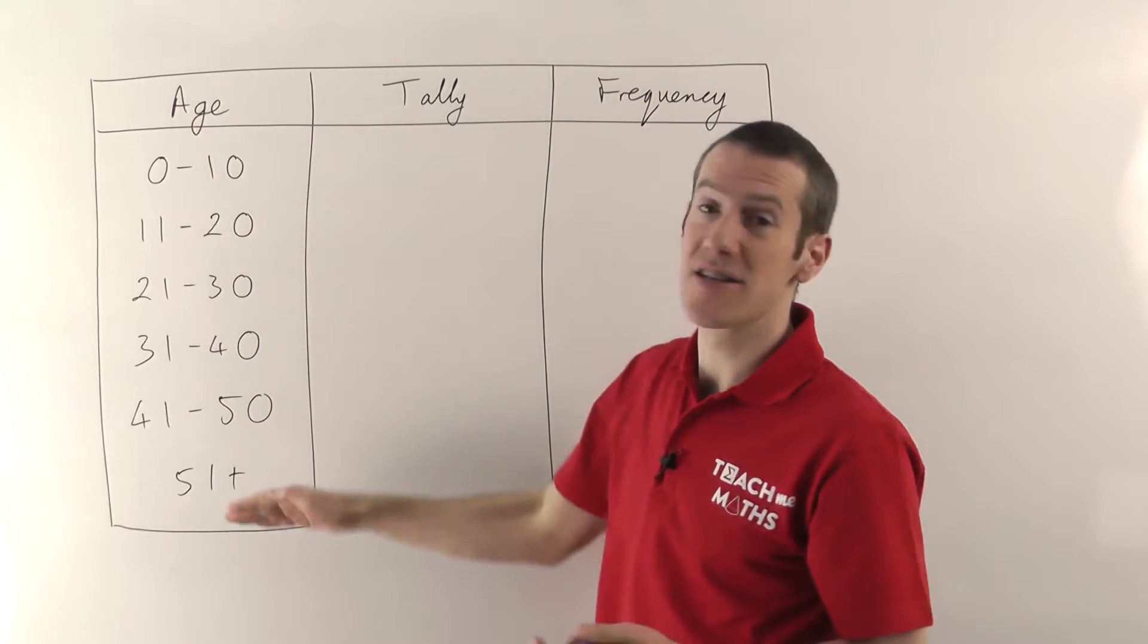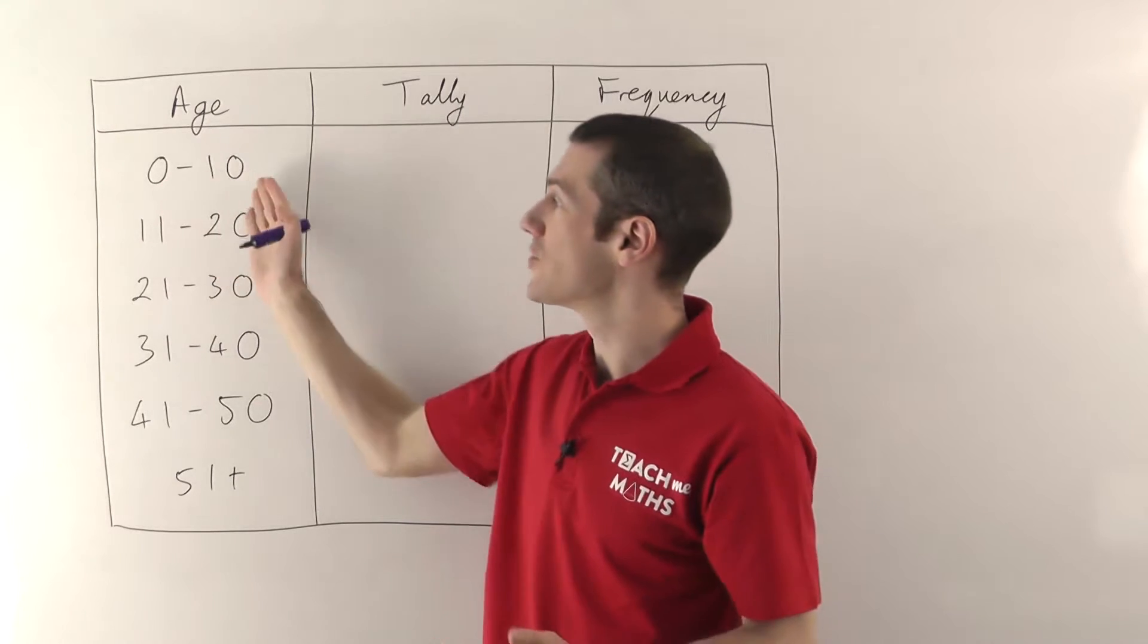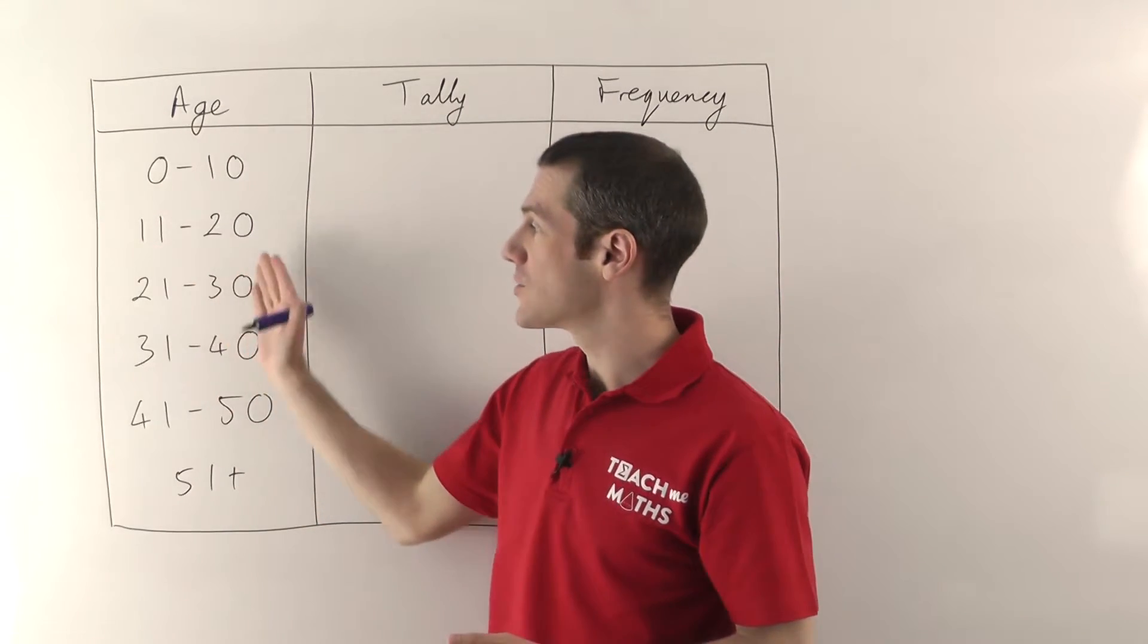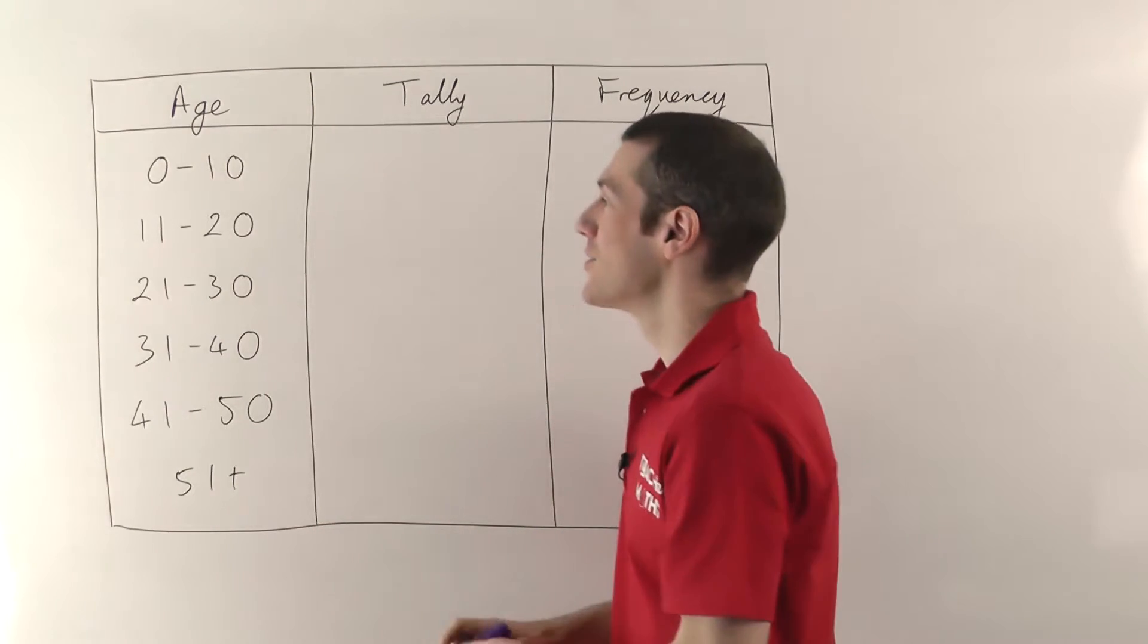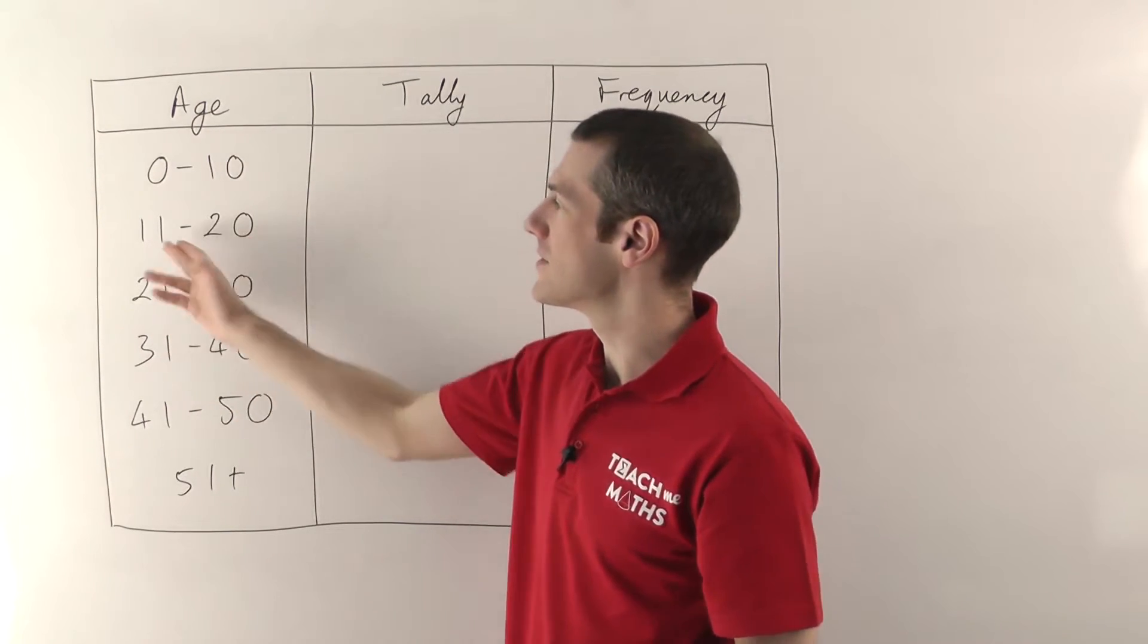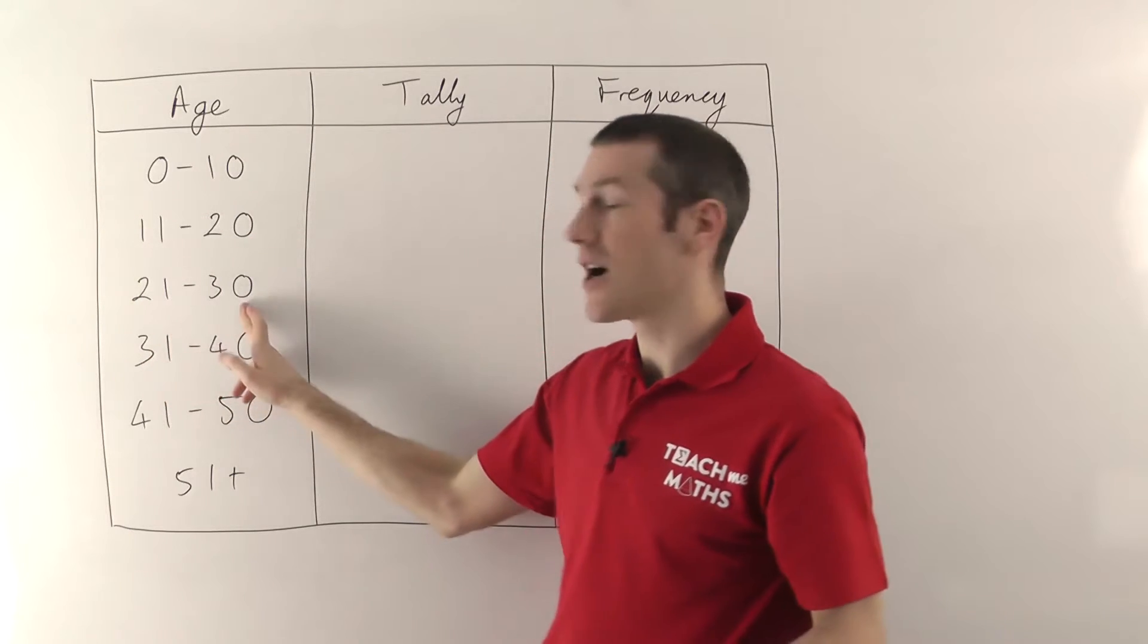So they could have ticked 0 to 10, they could have ticked 11 to 20, 21 to 30, etc. Now because I designed my questionnaire very well, you'll notice I don't have any overlapping boundaries. This goes up to 20 and the next one starts at 21. It's very important to get that right, otherwise the data can go horribly wrong.